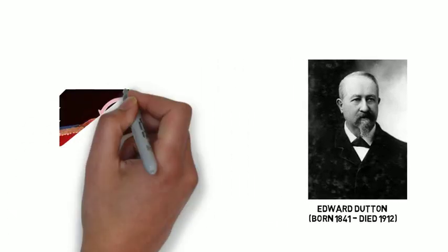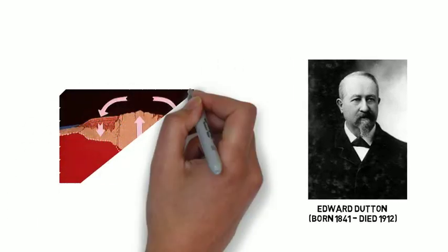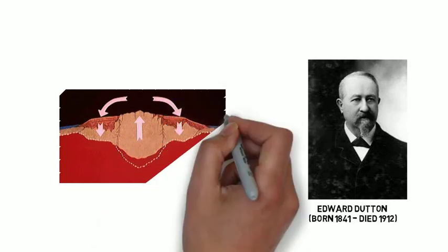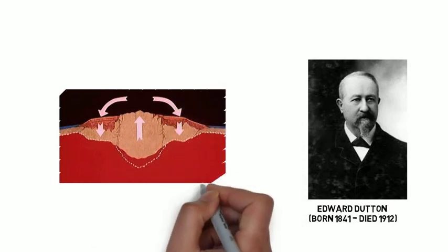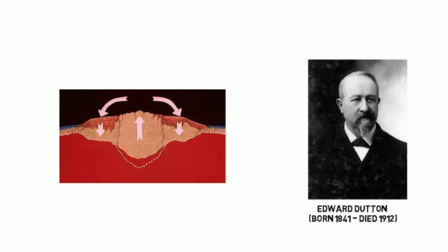Isostasy describes the gravitational equilibrium between the Earth's two upper layers, crust and mantle. The upper section of the mantle, called the asthenosphere, consists of weak plastic rocks and extends for 70 miles under the crust layer.